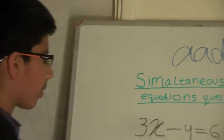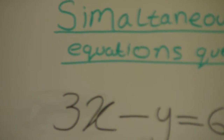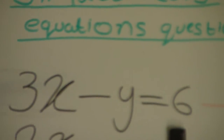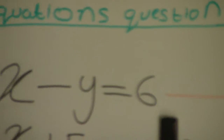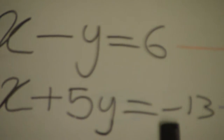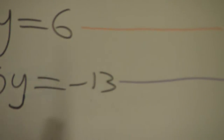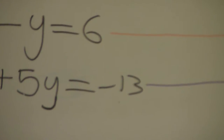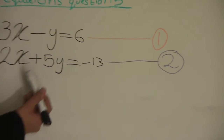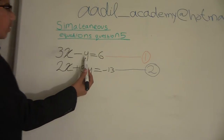Today our question is: 3x minus y equals 16, and we will label this equation number 1. And 2x plus 5y equals minus 13, and this will be labelled equation number 2.